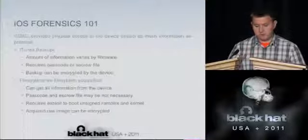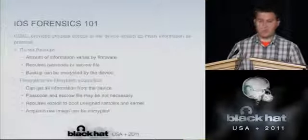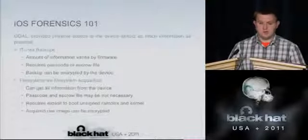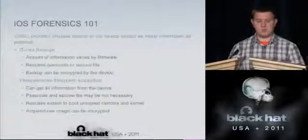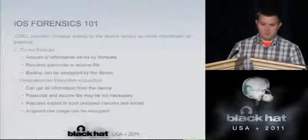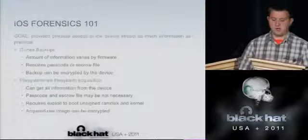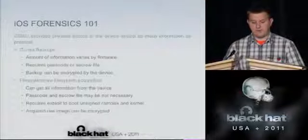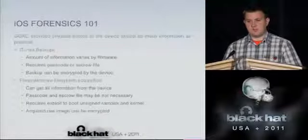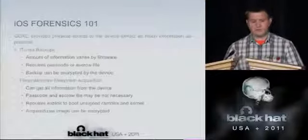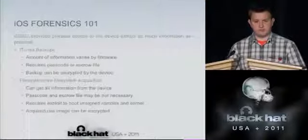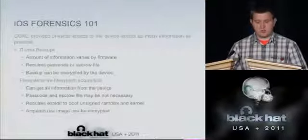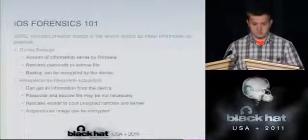The second problem is that raw images acquired with this method can be encrypted. This is actually the motivation behind our research, because the initial physical dumps of the iPhone 4 showed that the raw disk images are quite strange. The file system structures are in plain text — you can see files and directories — but when you try to read the file contents, they are encrypted.